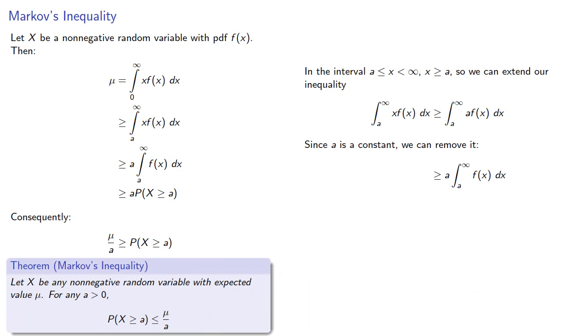Let X be any non-negative random variable with expected value μ. For any a greater than 0, the probability that X is greater than or equal to a is less than or equal to μ divided by a. Notice that we've switched the direction of our inequality to make it read a little bit easier.